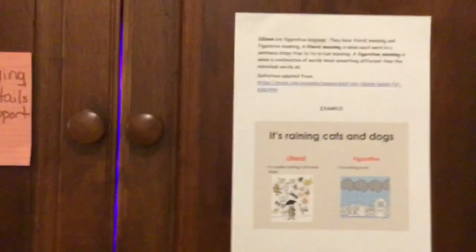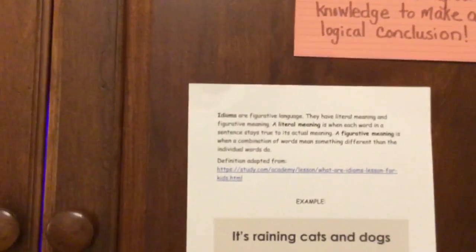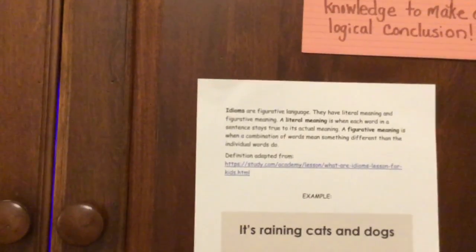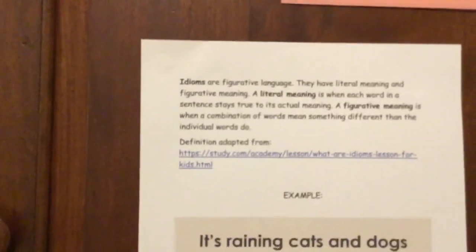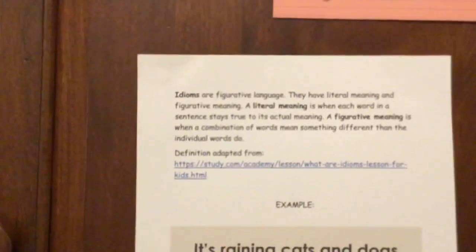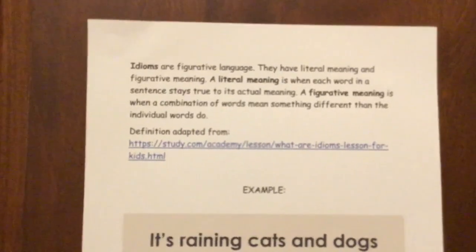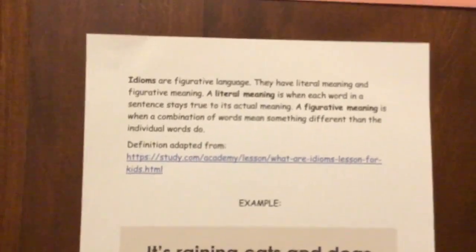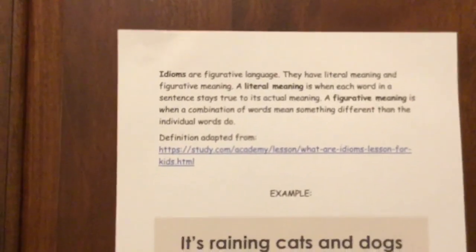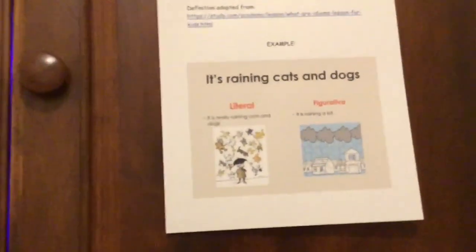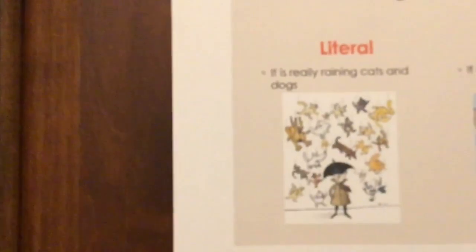And last, question number two — talking about Leah's father telling her to go climb a tree — is an idiom. Remember that idioms are figurative language. They have a literal meaning and a figurative meaning. A literal meaning is when each word in a sentence stays true to its actual meaning. A figurative meaning is when a combination of words means something different than the individual words do. For example: 'It's raining cats and dogs.' The literal meaning is that it is really raining cats and dogs. The figurative meaning is that it's raining a lot.